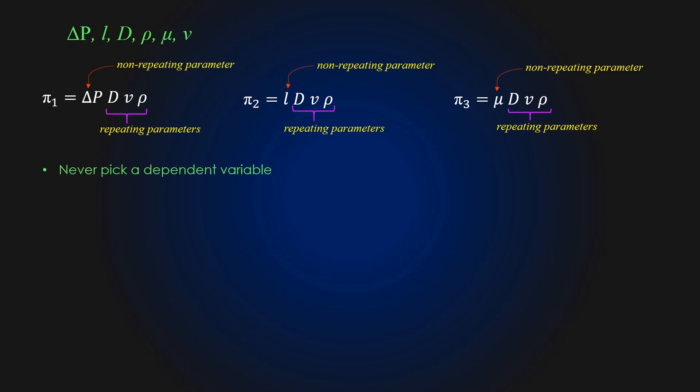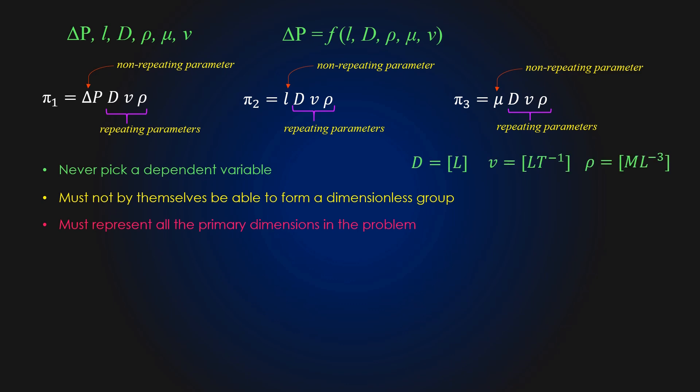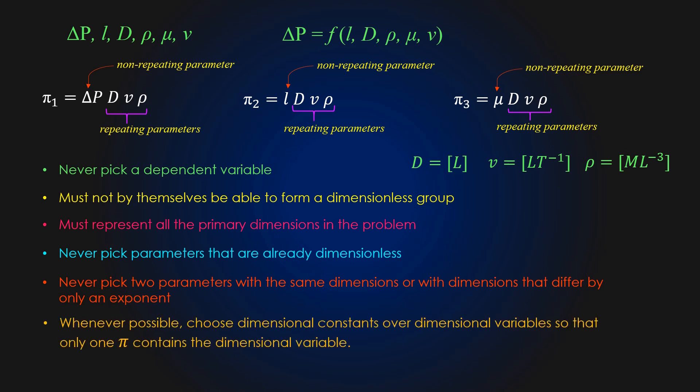Number one, never pick the dependent variable like delta P in this case. Otherwise, it may appear in all the pies which is undesirable. Number two, the chosen repeating parameters must not by themselves be able to form a dimensionless group. The chosen repeating parameters must represent all the primary dimensions in the problem. Never pick parameters that are already dimensionless. Never pick two parameters with the same dimensions or with dimensions that differ by only an exponent. Whenever possible, choose dimensional constants over dimensional variables so that only one pie contains the dimensional variable.